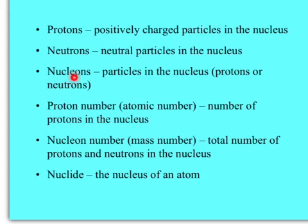Nucleons - particles in the nucleus, including protons and neutrons. Proton number, also called atomic number, is the number of protons in the nucleus. Nucleon number, or mass number, is the total number of protons and neutrons added together. Nuclide is the nucleus of an atom.